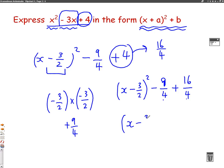So it's going to be x minus 3 over 2 squared. And if you do minus 9 on the top plus 16, you'll get the answer, which is plus 7 over 4, because you keep the denominator the same.